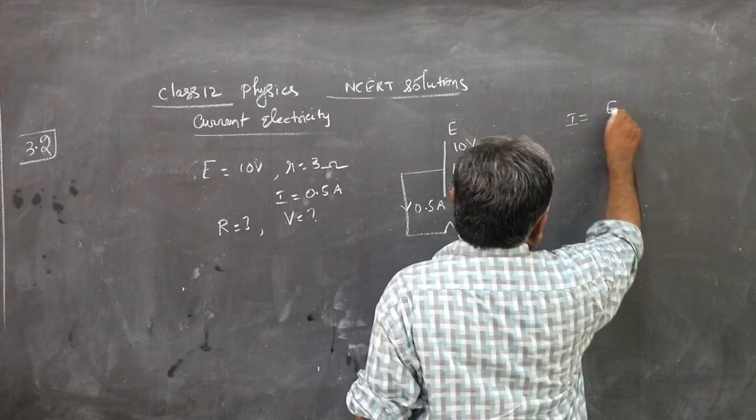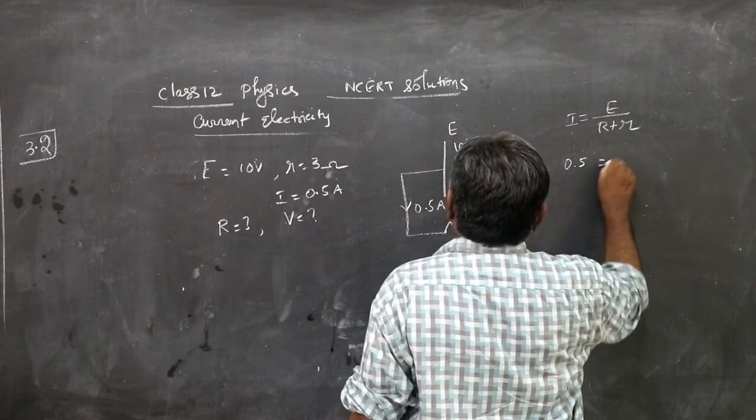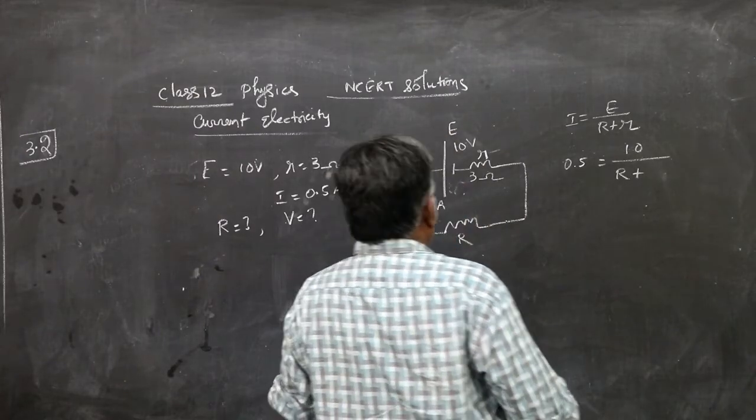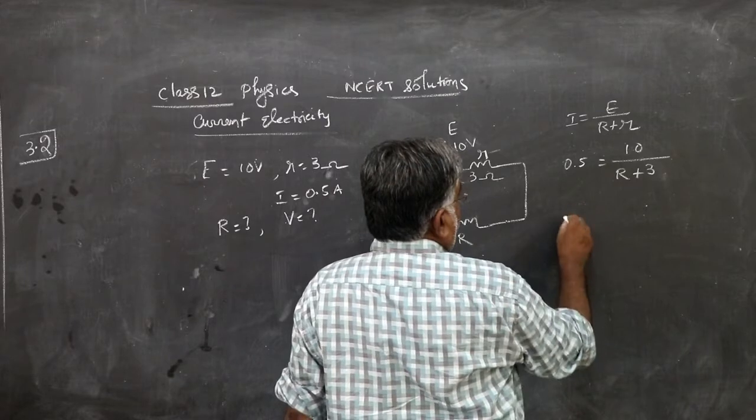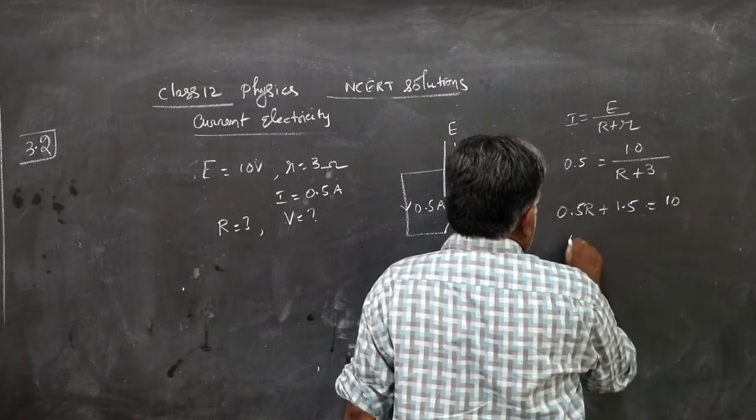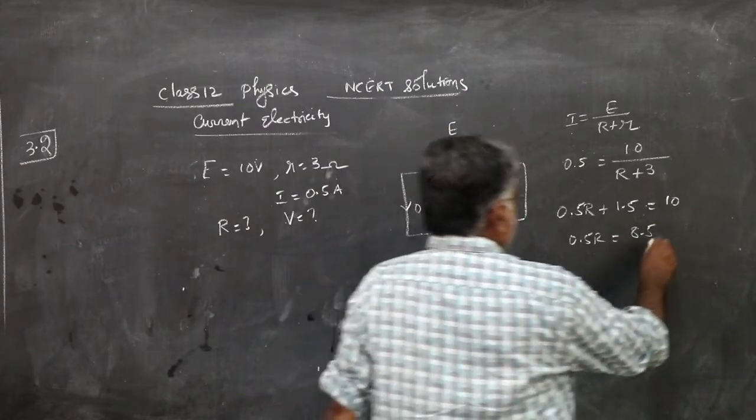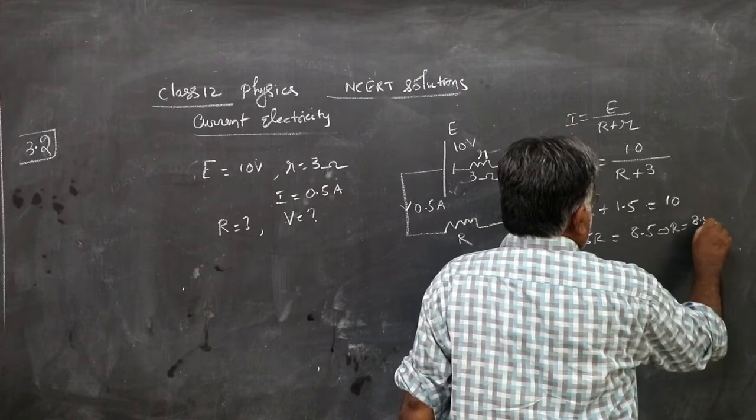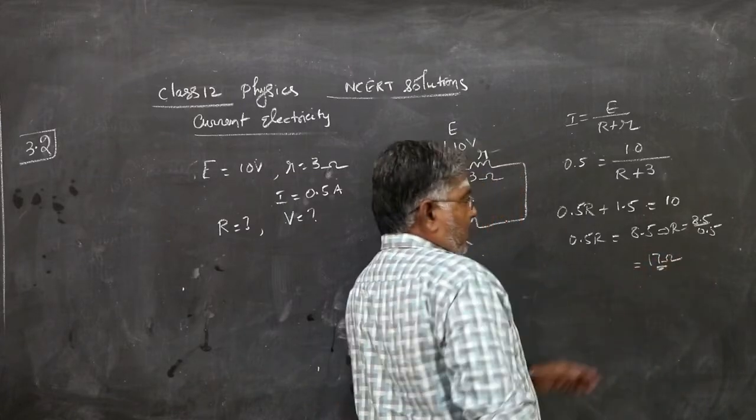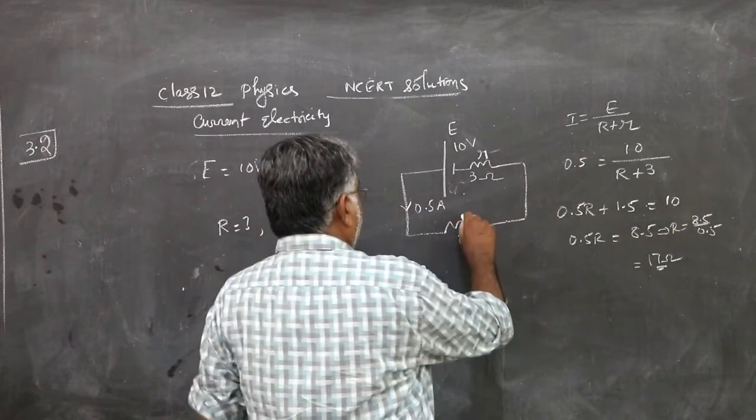You should use the formula, I is equal to E by R plus r. You are given I is 0.5, E is 10, R you don't know, you have to find that. Small r is 3 ohm. Take this to the other side, 0.5 times (R plus 3) equals 10. So, 0.5R plus 1.5 is 10. So, 0.5R is 8.5, which gives you R is equal to 8.5 by 0.5. 0.5 means half, so 17 ohm. So, this value is 17 ohm.